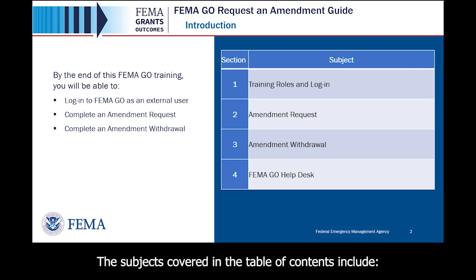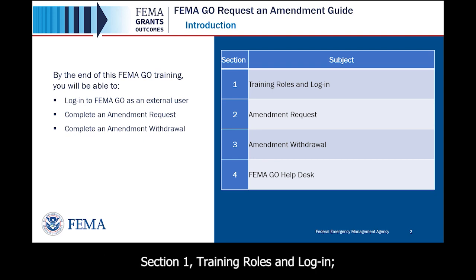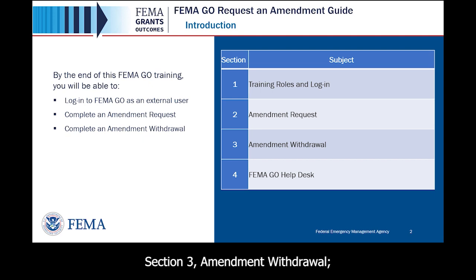The subjects covered in the Table of Contents include Section 1, Training Roles and Login; Section 2, Amendment Request; Section 3, Amendment Withdraw; and Section 4, FEMA GO Help Desk.